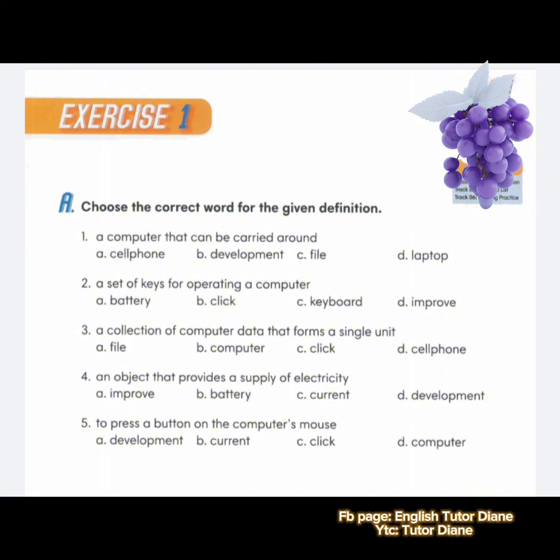Number five: to press a button on the computer's mouse. A, development. B, current. C, click. D, computer. Correct answer is click.